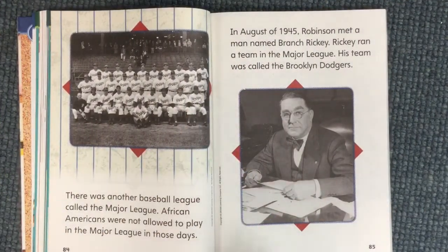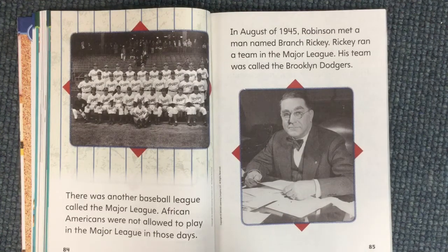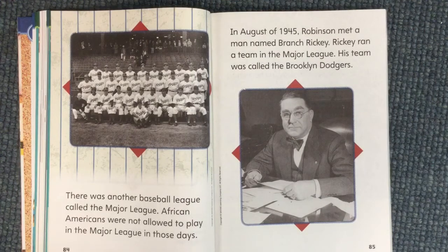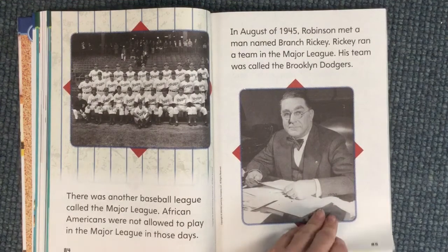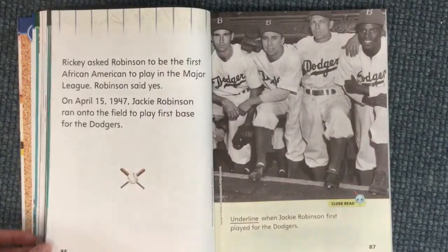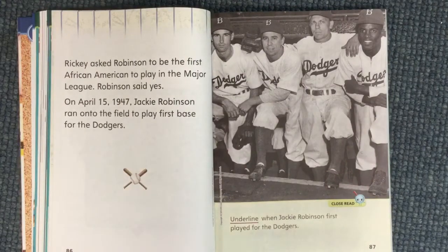There was another baseball league called the Major League. African Americans were not allowed to play in the Major League in those days. In August of 1945, Robinson met a man named Branch Rickey. Rickey ran a team in the Major League — his team was called the Brooklyn Dodgers. Rickey asked Robinson to be the first African American to play in the Major League, and Robinson said yes.